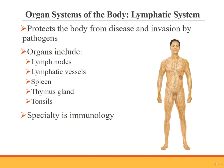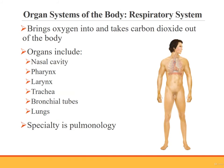The lymphatic system protects the body from disease and invasion by pathogens. Organs of the lymphatic system are the lymph nodes, lymphatic vessels, spleen, thymus gland, and tonsils. Immunologists care for the lymphatic system. The respiratory system brings oxygen into the body and removes carbon dioxide from the body. Organs of the respiratory system include the nasal cavity, pharynx, larynx, trachea, bronchial tubes, and lungs.